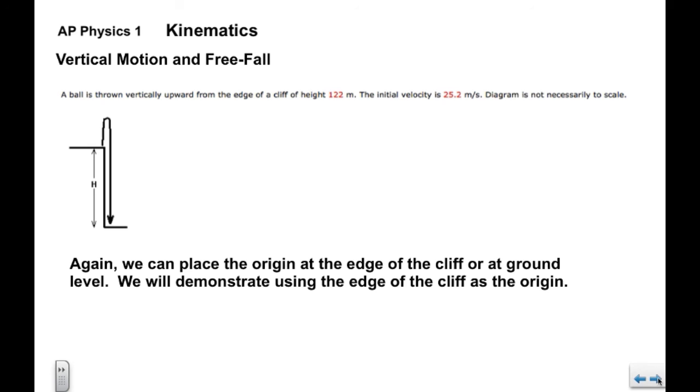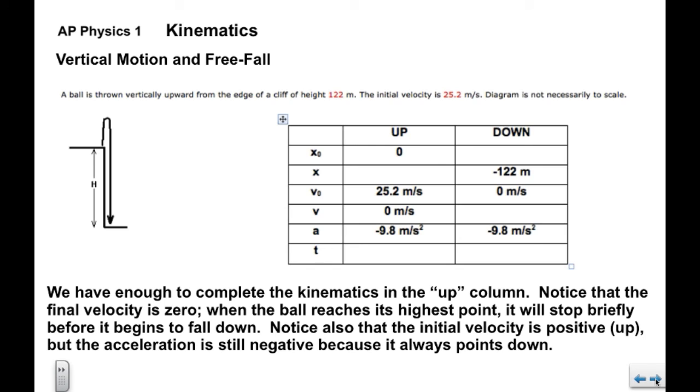Okay, so here's a typical example. Again, we have a cliff of known height, 122 meters, that's the h in the diagram here. We're given the initial velocity, it's upward. The ball's going to go up, reach a high point, and then come back down and land at the base of the cliff. We could conceivably place the origin here at the edge of the cliff, or we could put it down at the base of the cliff here. For our purposes here, we're going to use the edge of the cliff here, so this will be our origin.